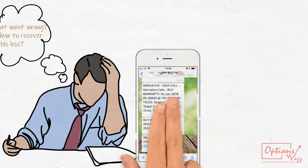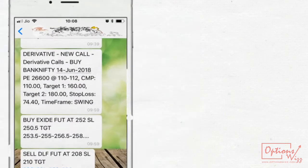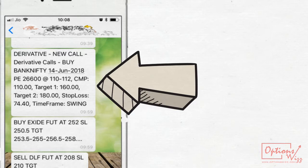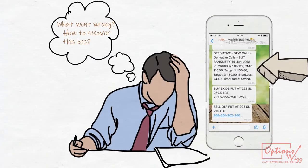Before he could come out of this shock, he got another super brilliant tip. It read, new call: buy Bank Nifty 14th of June 26,600 put at 110, target 160 to 180, stop loss 74.